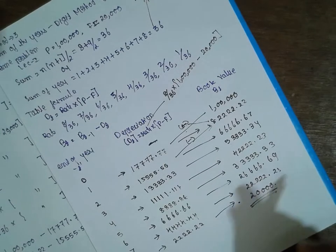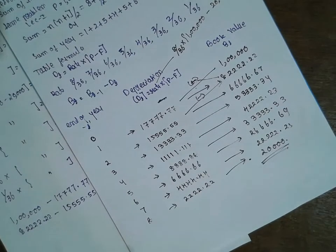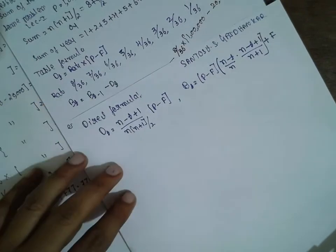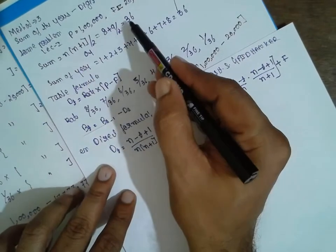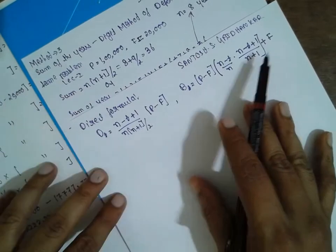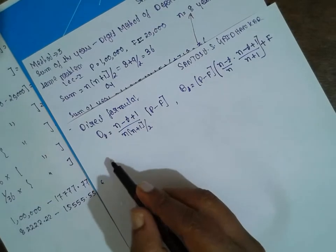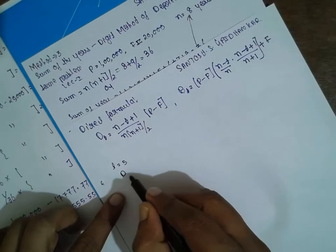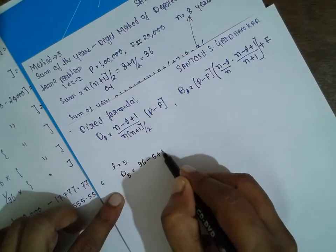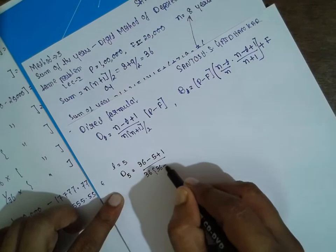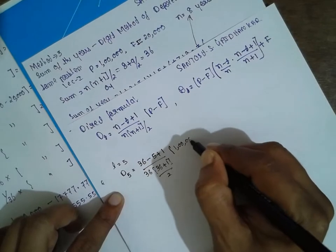Instead of the table, you can use the direct formula. For t = 5: dt = [(n − t + 1) / (n(n+1)/2)] × (P − F). Initially I mistakenly used n = 36 instead of the life n = 8. Substituting n = 36 and t = 5 gives: d5 = [(36 − 5 + 1) / ((36 × 37)/2)] × (1,00,000 − 20,000).